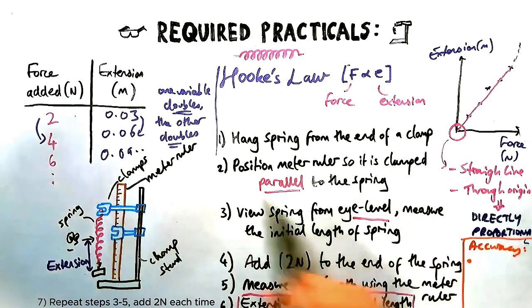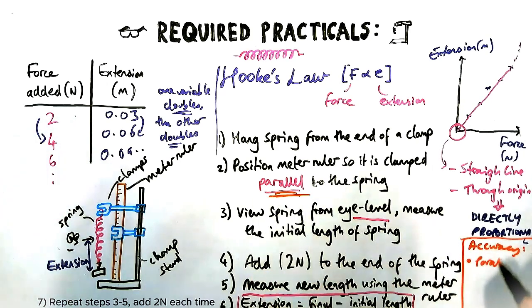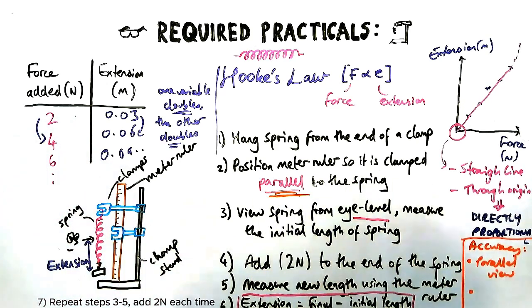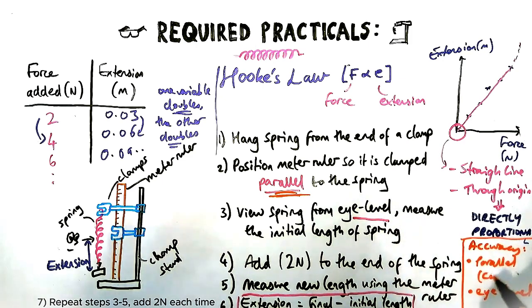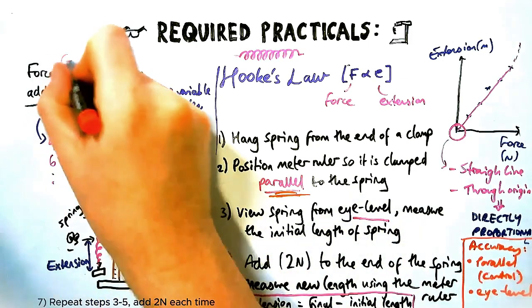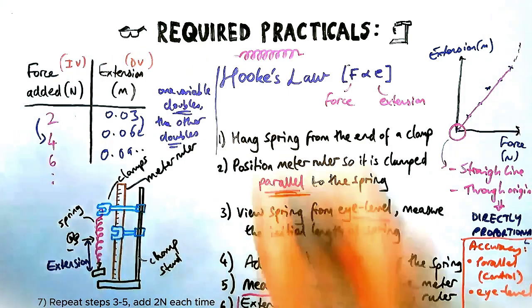How do you make sure this experiment is accurate? Well, we want to make sure the clamp has the ruler parallel to the spring to make sure we get an accurate reading, and we want to measure it at eye level. Okay, so that will be a control variable. Do that every time. Don't change it.